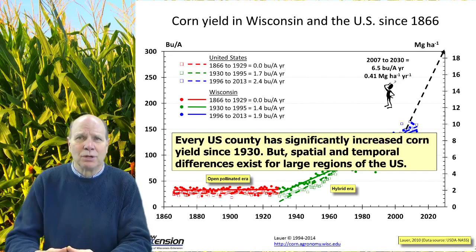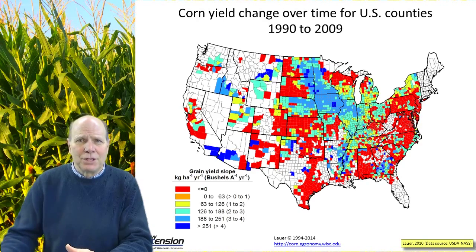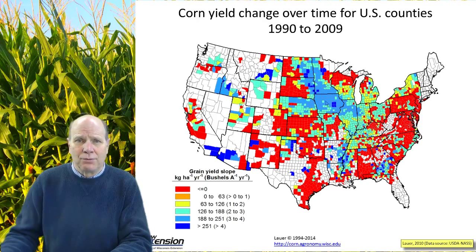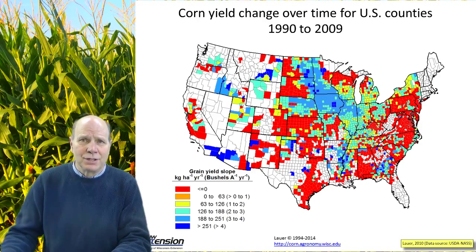There's a lot of spatial and temporal variability that exists for large regions of the U.S. This map shows the rate of yield increase for corn across the U.S. just for the last 20 years from 1990 to 2009. Much of the yield increase has been occurring in the central Corn Belt at about 3 to 4 bushels per acre per year, but there are large areas in Kansas, Virginia, and the eastern side of the country where there really haven't been much yield increases. In Wisconsin, especially along the northern Corn Belt, we haven't seen as much yield increase as the southern part of the state.